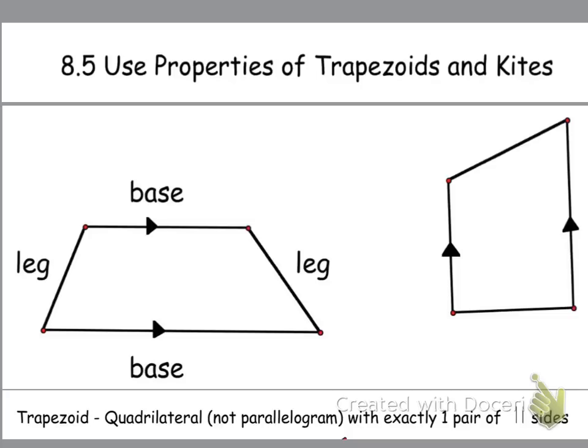The parallel sides are called the bases, so right here, those parallel sides, no matter how the shape is oriented, the parallel sides are always called the bases, so over here, these would be your bases as well, even though the trapezoid is standing up on end.